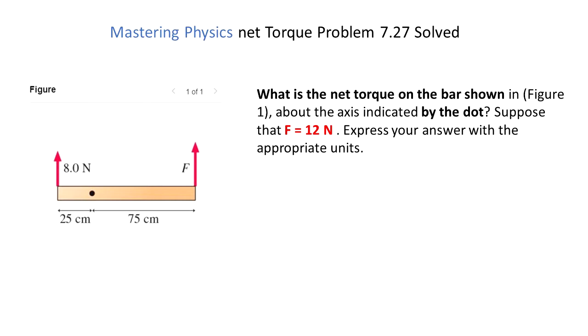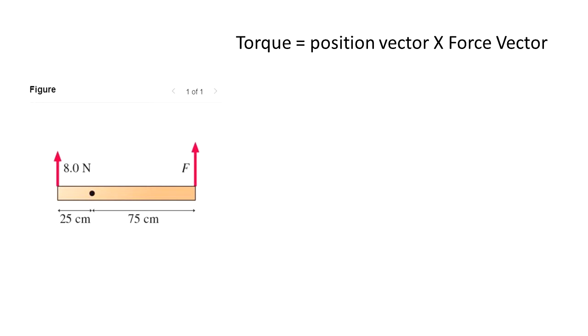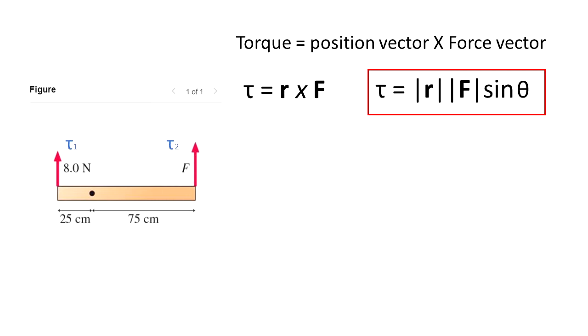First we have to define the torque. Torque is the position vector cross product with the force vector. And we can see that it's also the magnitude of the position vector times the magnitude of the force vector times the sine of theta, that's the angle between them.